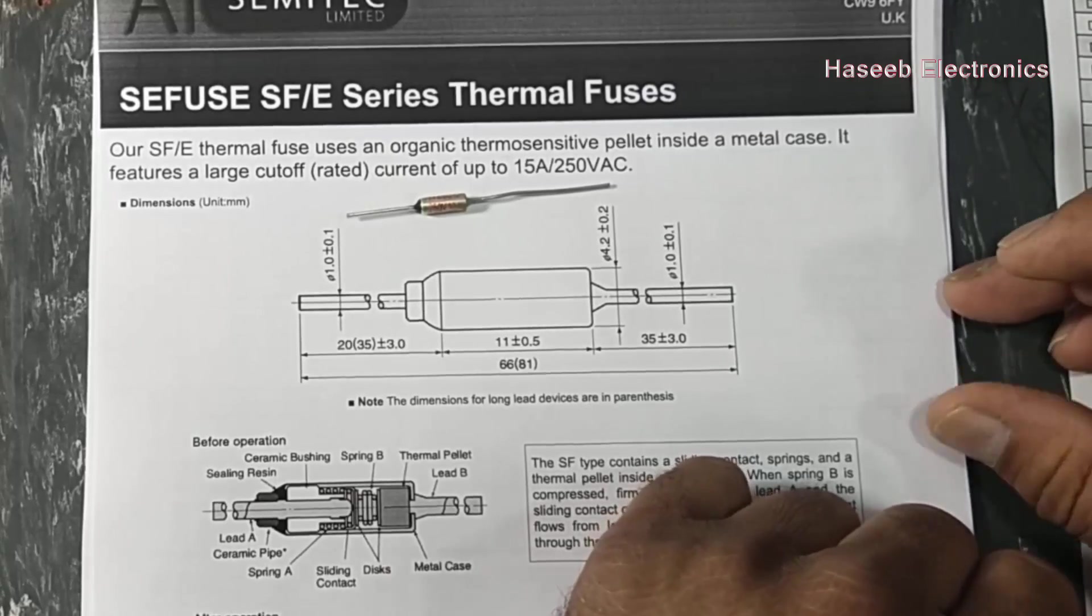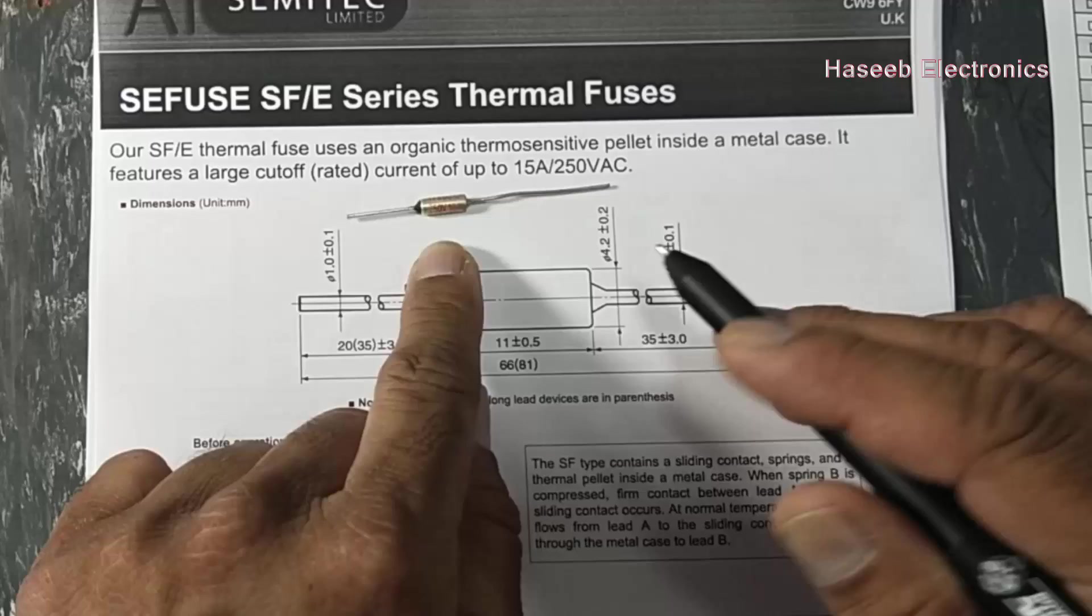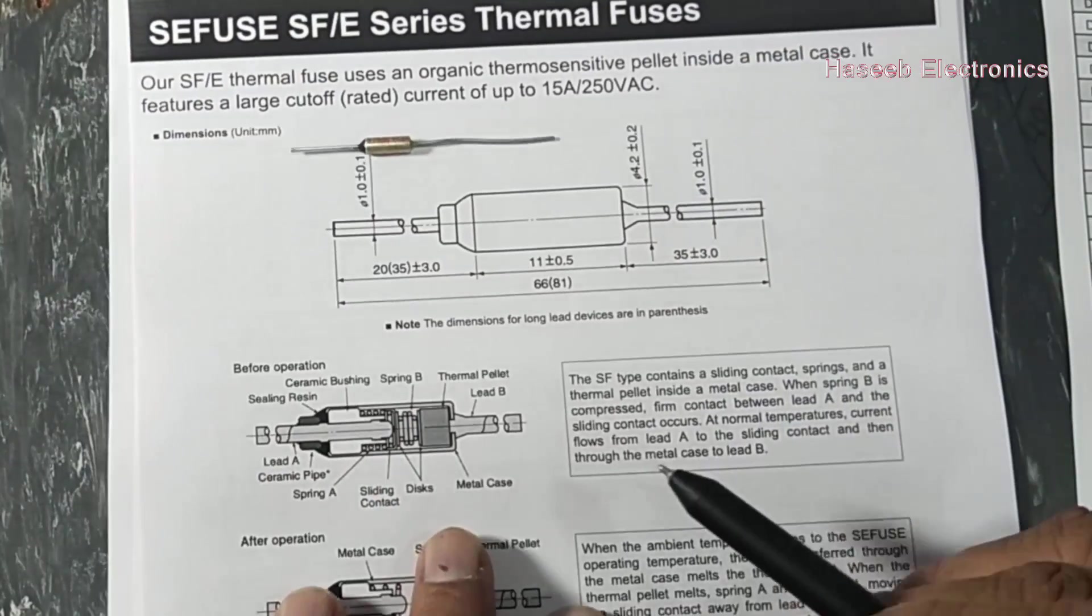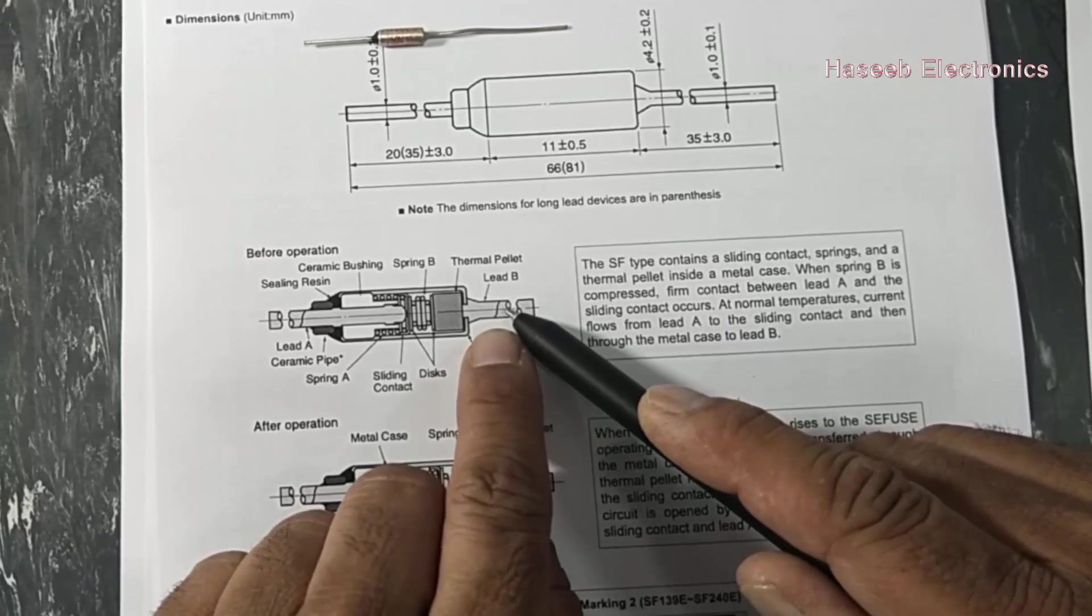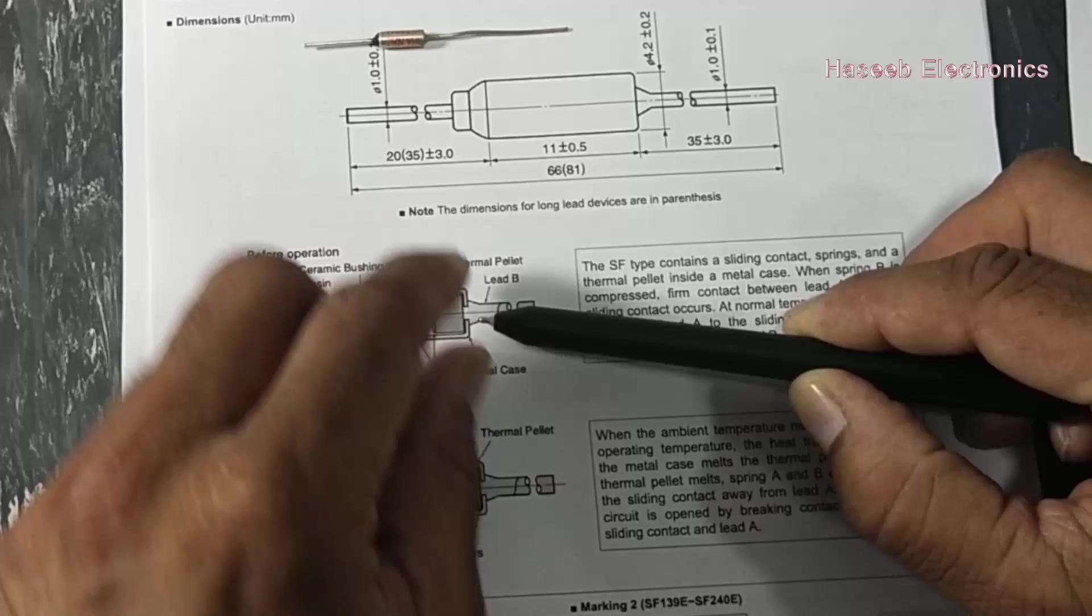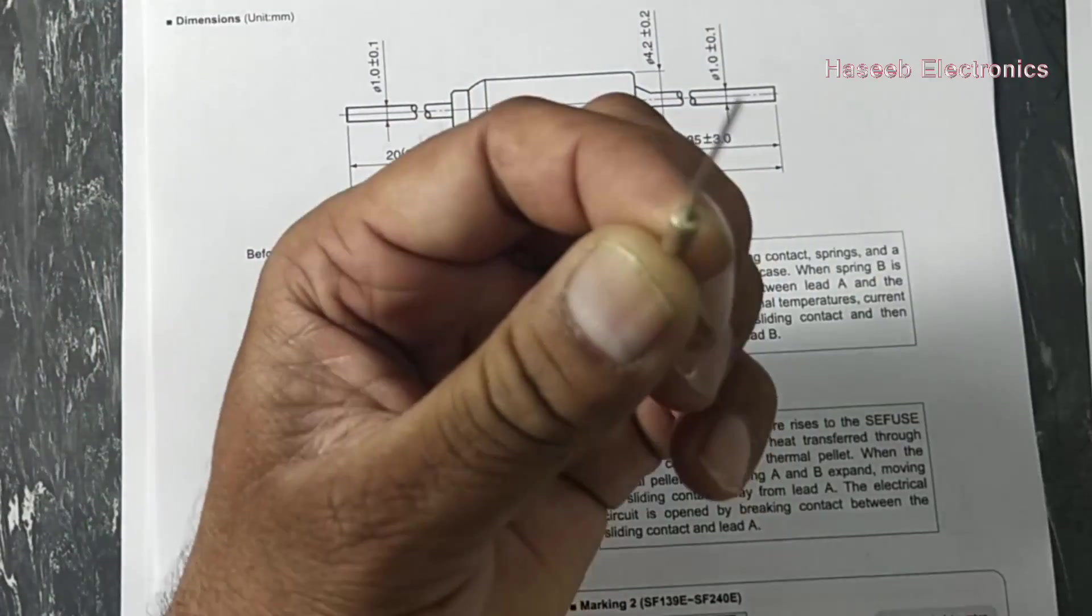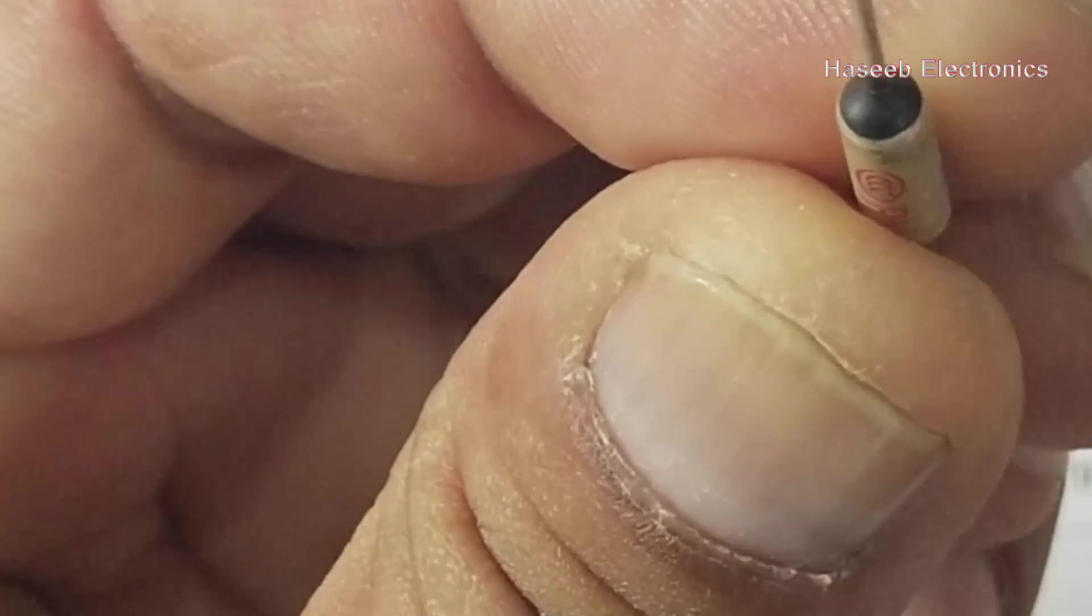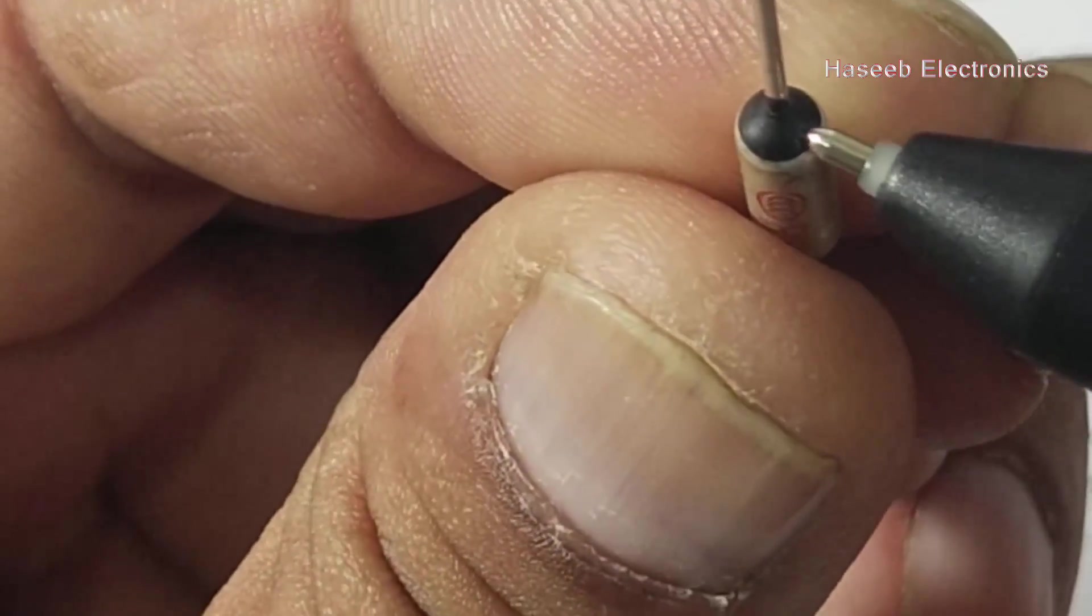If you see its structure, it has two leads - lead A and lead B. Lead B is solid, and lead A side is epoxy filled.